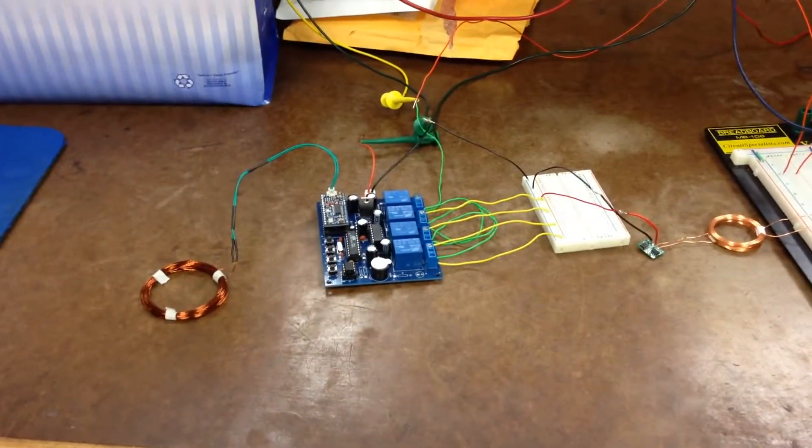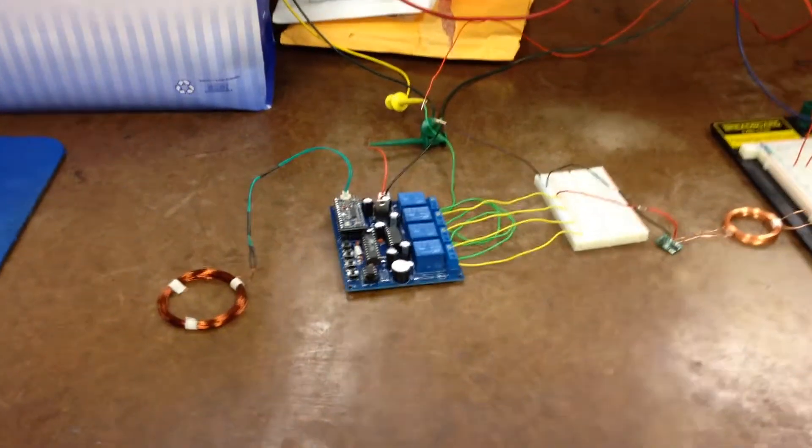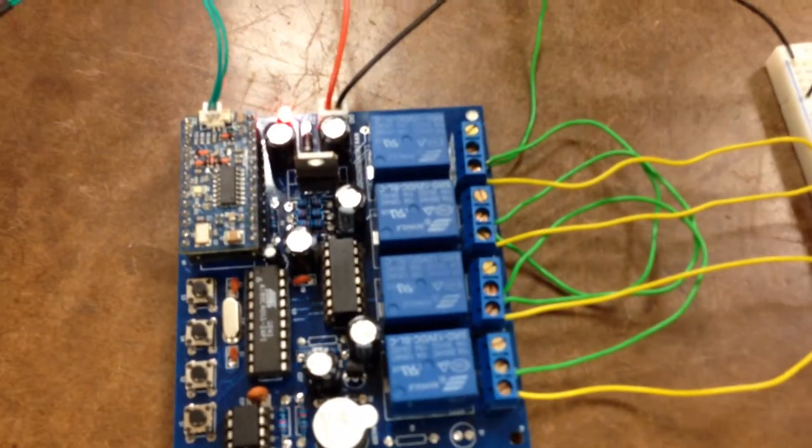Hello everyone, this is our RFID automobile wallet charger system. This is the antenna reading the RFID signal and this is the RFID relay driver.